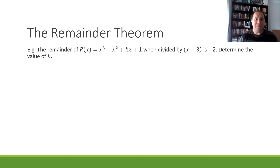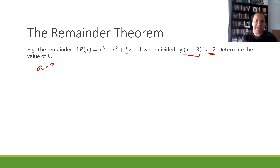Let's do another example. This time we've got an unknown value k, and we know when this polynomial is divided by x minus 3 the remainder is negative 2, so we have to determine the value of k. Looking at our linear factor, our a value is positive 3, so our remainder is going to equal our polynomial evaluated at 3, which we're told is negative 2.